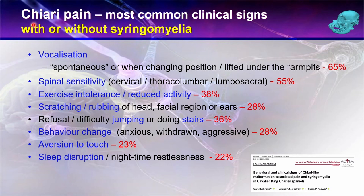They can have spinal sensitivity — and bear in mind they can have these signs without syringomyelia, so without actual damage to their spinal cord. They can have sensitivity in their neck, at the junction between their ribcage and their lumbar spine, and at the lumbosacral junction. Many owners report that their dogs are less inclined to exercise — they may not be able to do a normal length walk, not able to go more than 30 minutes, or they may be initially interested in playing but rapidly stop or have completely ceased playing.